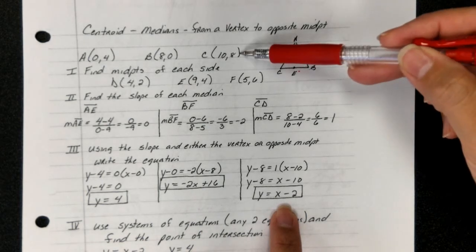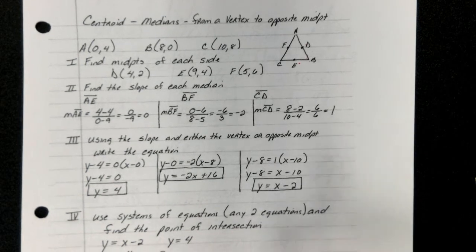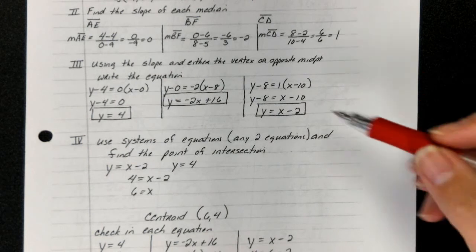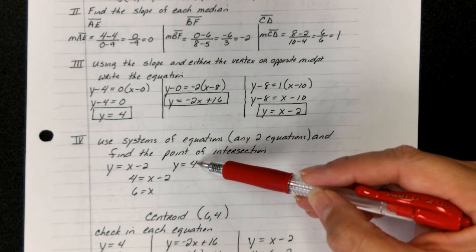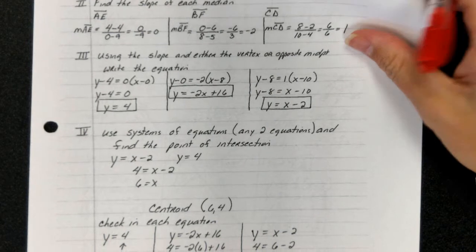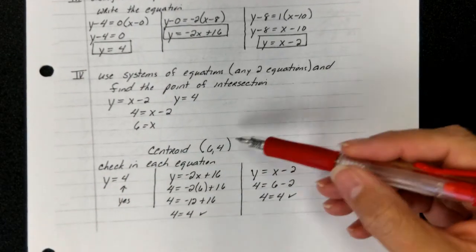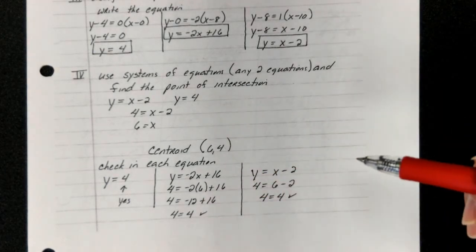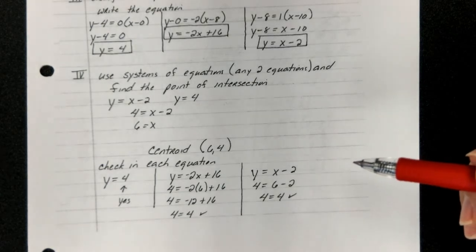Just like before, your fourth step is using a system. Pick any two equations. I'm going to always use the one if I have a variable already defined. I'm going to use that equation and then the simplest of the ones that I found. Just like with a circumcenter, you can check to see does your centroid actually work. So guys, this is what we're doing: we're finding the x and y value to see what your actual centroid point is.